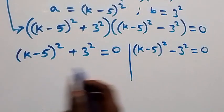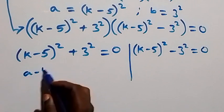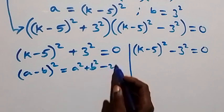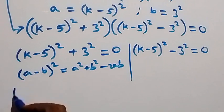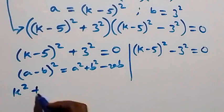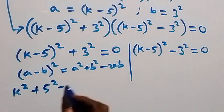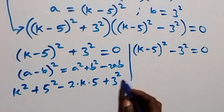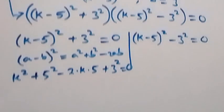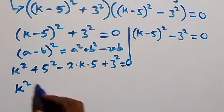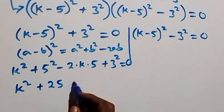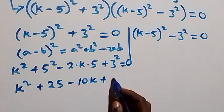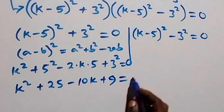Solving the first case, the expansion follows from (a minus b) squared equals a squared plus b squared minus 2ab. That is, we have k squared plus 5 squared minus 2 times k times 5, then plus 3 squared equals to 0. This gives us k squared plus 25 minus 10k plus 9 equals to 0.